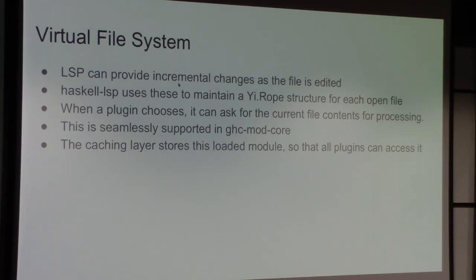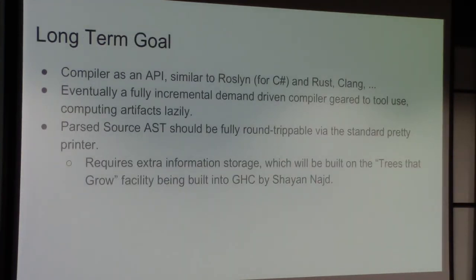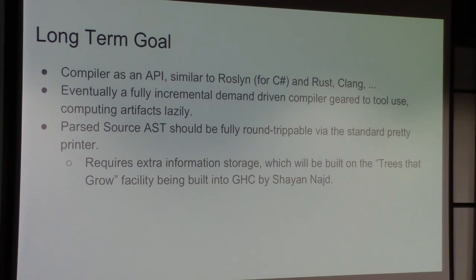Now, some shortcomings: no REPL, GHC 8.2 only — it's not going to support earlier versions of the compiler. But the 8.2 support is coming in, and by the time this thing is fully completed it will be general enough. There are other options for people further back. The long-term goal — the sort of IDE support in GHC — is to have the compiler as an API, or as Sharon Peyton Jones says, to democratize the compiler. The compiler at the moment exists for the purpose of GHC doing batch compilation, but there are a lot of other interesting things you can do with it. If you can tease it apart into pieces, those pieces can be used individually and put together in different ways.